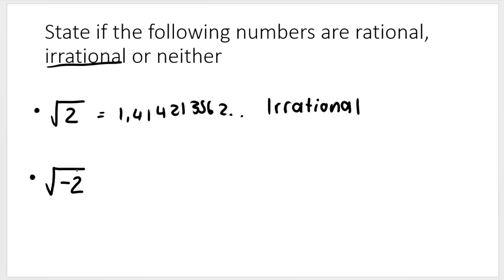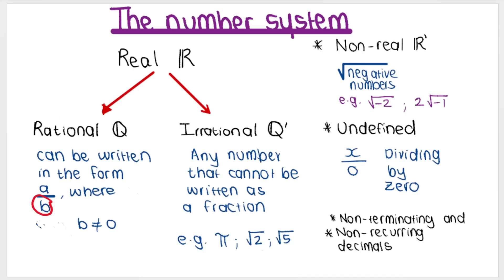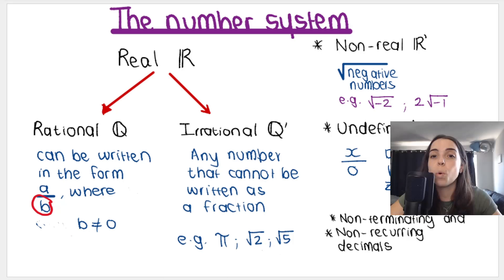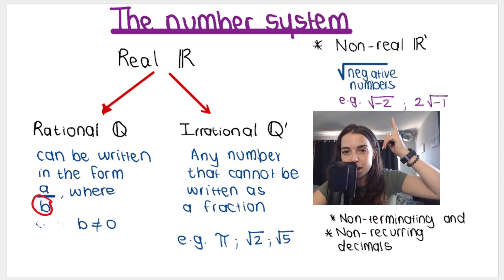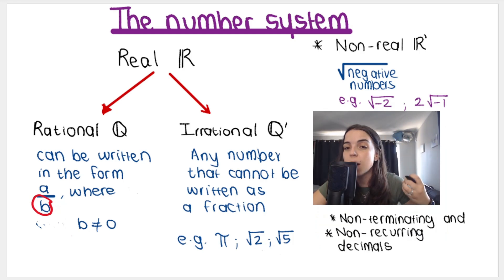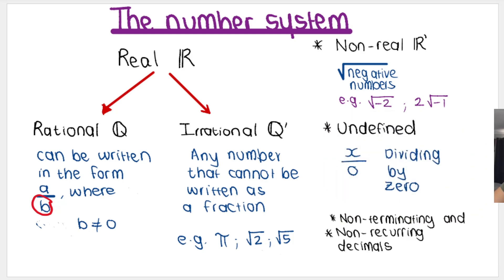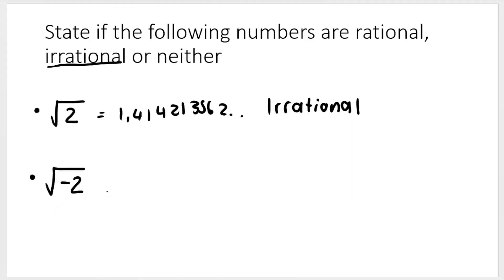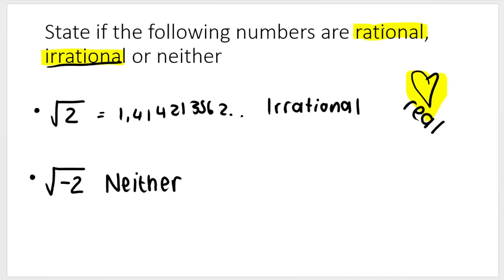Then they say the square root of negative two. As we discussed in the previous video, square rooting a negative ends us up with something we call a non-real number. If you do it on your calculator, it will actually say math error. It's a non-real number. So my answer is neither, because it's not rational and it's not irrational. Remember, rational and irrational together give me the real numbers, but this is neither — it's technically non-real.